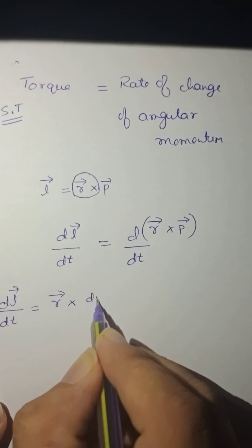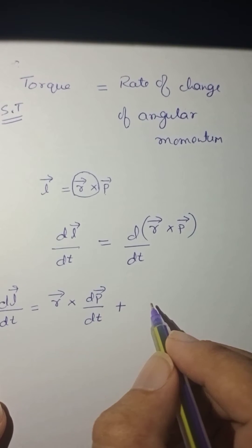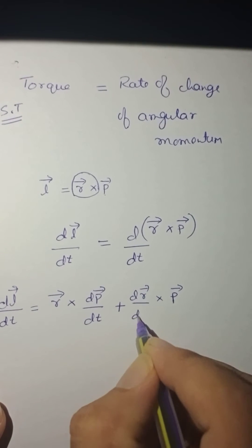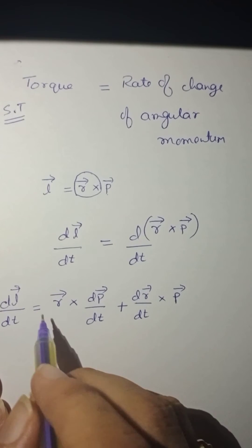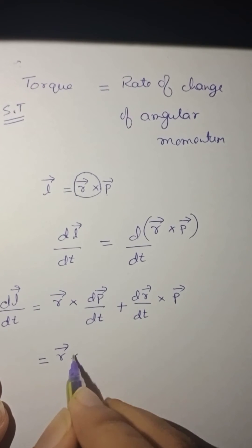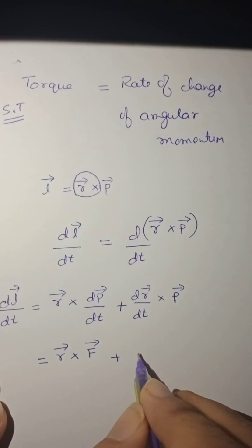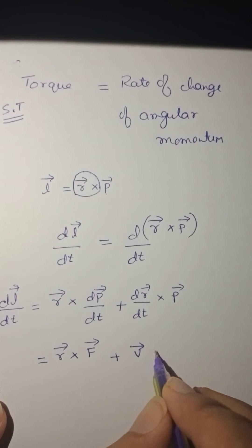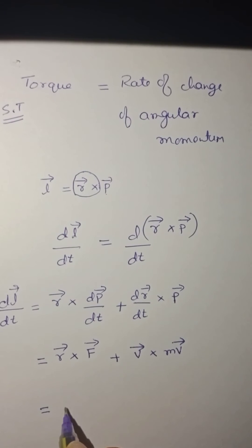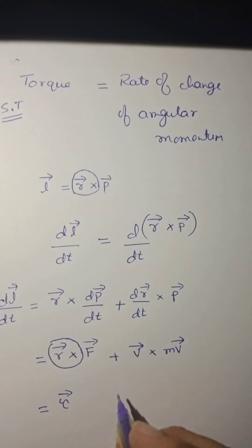So this gives R into dP by DT, plus P into dr by dt. Now, dP by DT is force — rate of change of momentum is directly proportional to force. And dr by dt is V, and momentum P is equal to m into V. So R cross F is equal to torque — moment of a force is equal to torque.